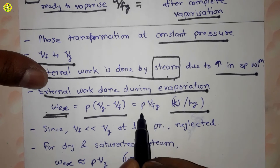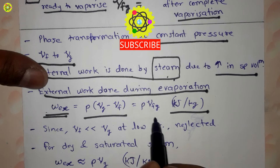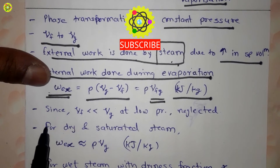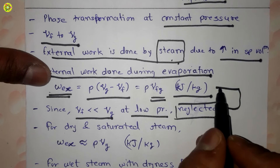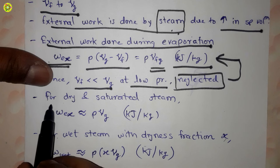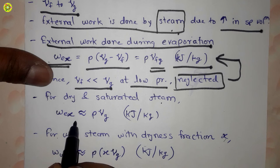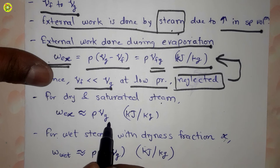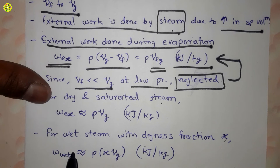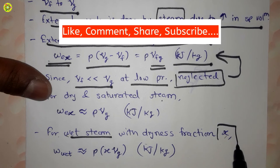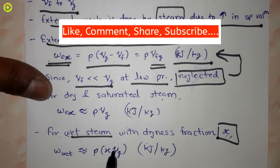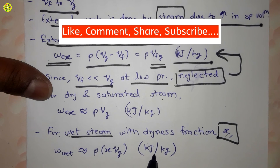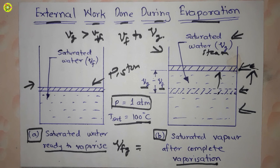Since vf is less than vg, at low pressure vf is neglected in this equation. So for dry and saturated steam, w_ex is approximately equal to p × vg, in kilojoules per kilogram. Further, for wet steam with dryness fraction x, the external work done is approximately equal to p × x × vg, in kilojoules per kilogram.